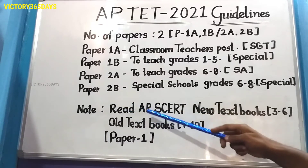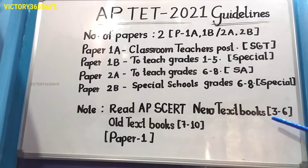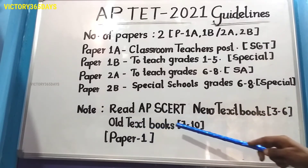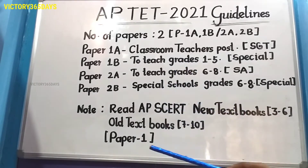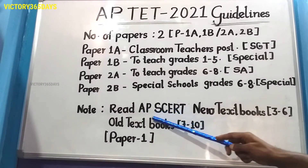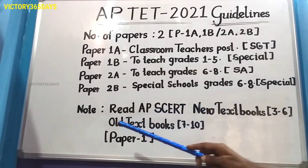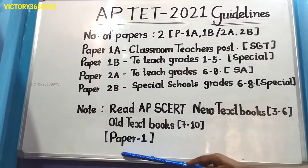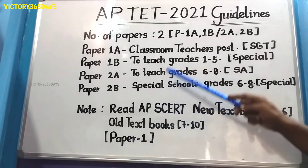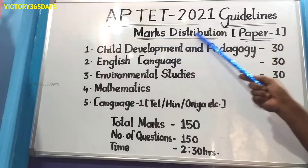So that covers Paper 1A, 1B, 2A, and 2B. Now note what textbooks you have to read. For Paper One, read Andhra Pradesh SCERT new textbooks for classes three to six, and old textbooks for classes seven to ten.